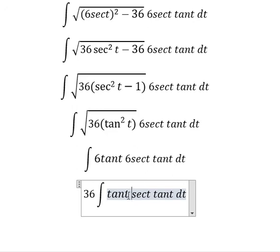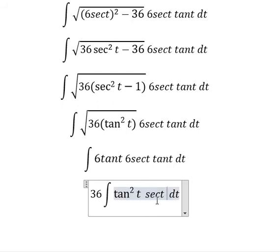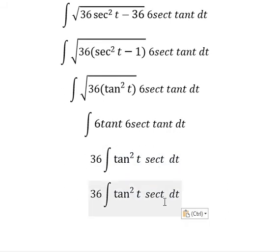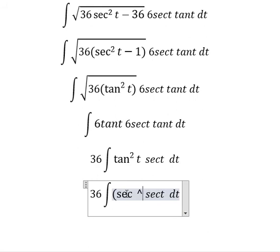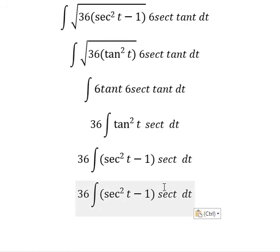We have tan squared of t. We change tan squared of t for secant squared of t minus 1. So we have secant squared of t minus 1, multiplied together with the other terms.